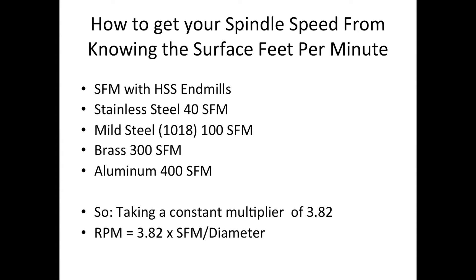So how to get your spindle speed from knowing the surface feed per minute. Here are some examples of surface feed per minute taken from a machinist's handbook. HSS refers to high-speed steel end mills. For stainless steel it's 40 surface feet per minute, and for aluminum it's 400 surface feet per minute. There's a constant multiplier of 3.82 that we use — multiply by the surface feet, then divide by the diameter of the tool. The full formula is N equals 12V over pi D, but it simplifies to about 3.82. Some people use 4, which is fine.